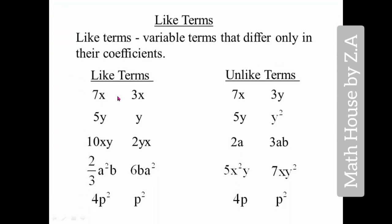Here are some examples of like and unlike terms. Like terms are variable terms that differ only in their coefficient — coefficients can be different, signs can be different, but the variable must be the same. For example, 7x and 3x both have x as a variable, so they are like terms. On the other hand, 7x and 3y have different variables, so they are unlike terms.